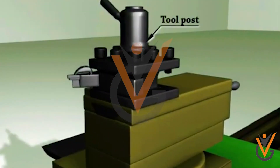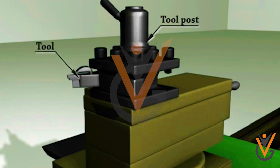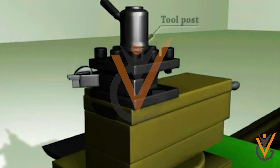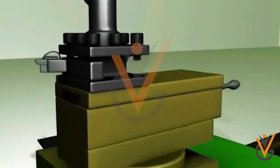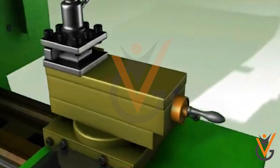Tool post. The tool post is mounted on the compound rest and is used to hold various cutting tool holders. The holders rest on a wedge which is shaped on the bottom to fit into a concave-shaped ring, of segmental type, which permits the height of the cutting edge to be adjusted by tilting the tool. It is fixed on the top slide and gets its movement by the movement of the saddle, cross slide, and top slide.